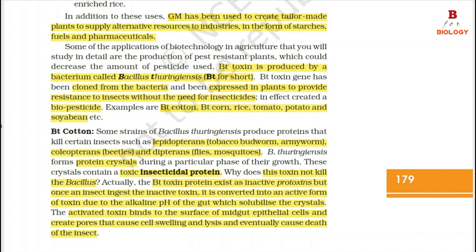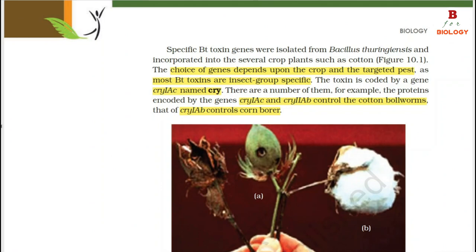The activated toxin binds to the surface of mid-gut epithelial cells and creates pores that cause cell swelling and lysis, eventually causing death of the insect. Specific Bt toxin genes were isolated from Bacillus thuringiensis and incorporated into several crop plants such as cotton. The choice of genes depends upon the crop and the target pest, as most Bt toxins are insect-group specific. The toxin is coded by a gene named CRY — for example, proteins encoded by genes CRY1AC and CRY2AB control the cotton bollworms, while CRY1AB controls corn borer.